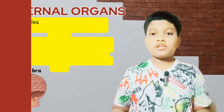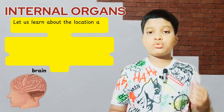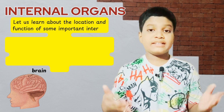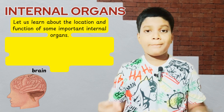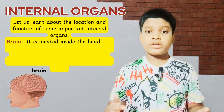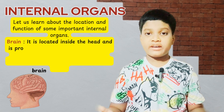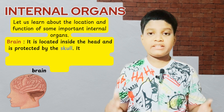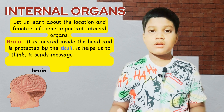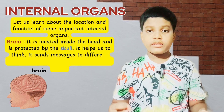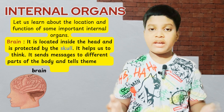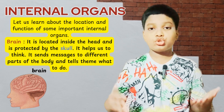Let us learn about the location and function of some important internal organs. Brain: it is located inside our head and is protected by the skull. It helps us to think. It sends messages to the different parts of the body and tells them what to do.